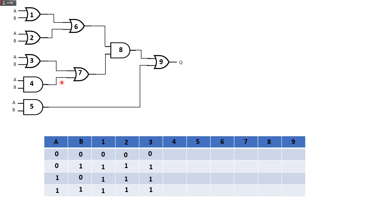Gate 4 is an AND gate — so its outputs differ. We are still basing inputs on A and B. 0 and 0 is 0, 0 and 1 is 0 — since A has a 0, therefore the output is 0. Same goes for the next row. When both are on, the output is 1. Gate 5 is also an AND gate — same results.